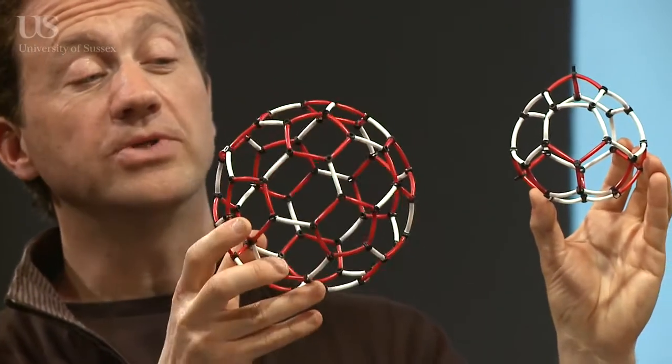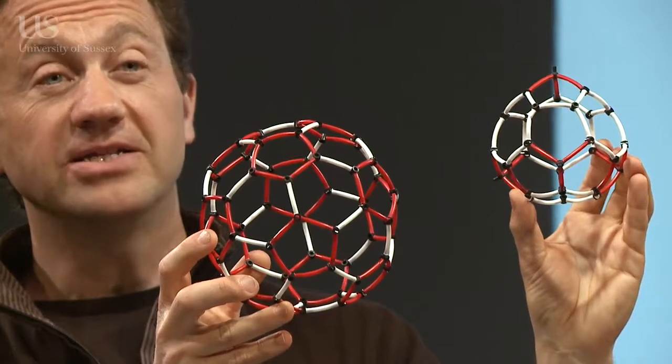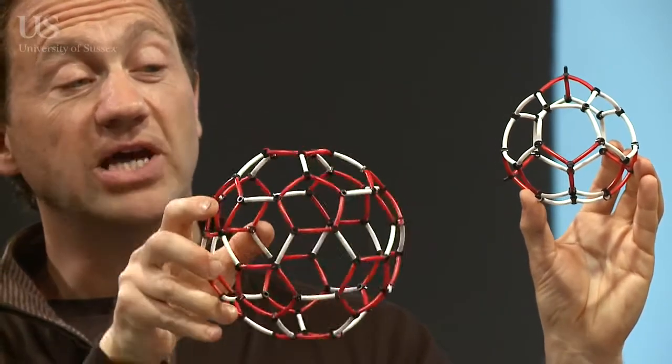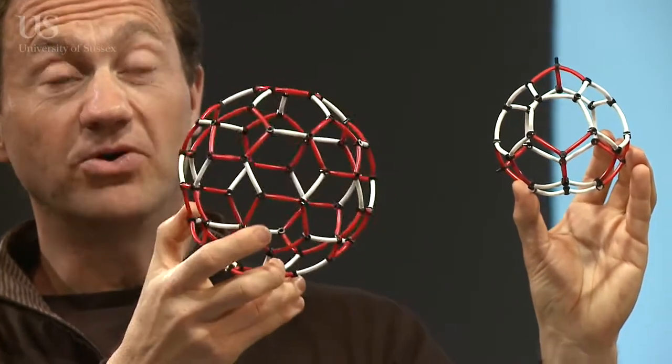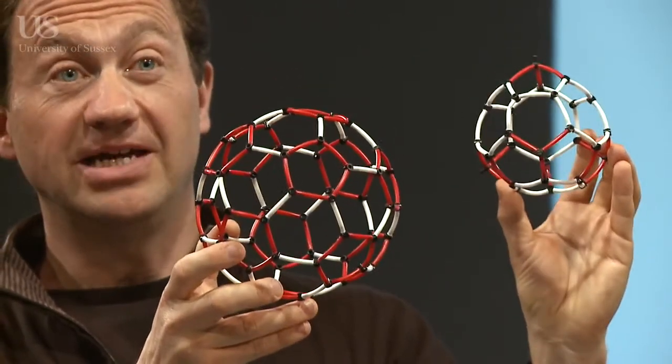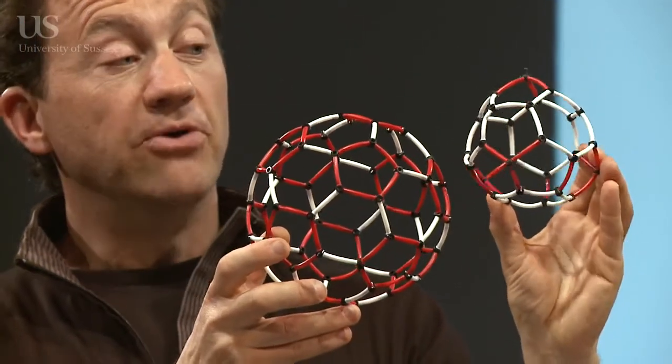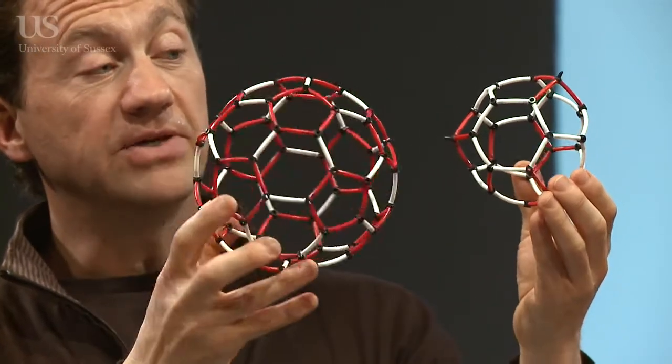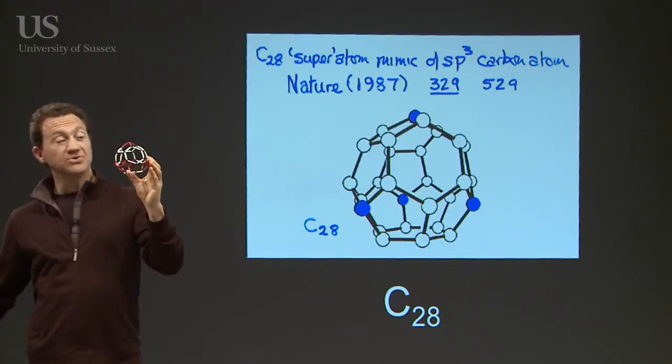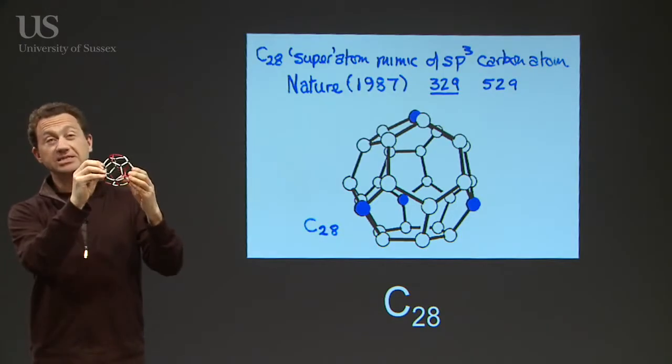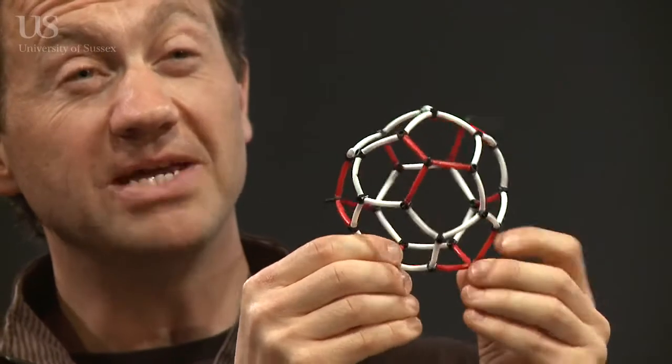So what happens is, you go smaller than C60, the pentagons are no longer isolated from each other by white bonds in the model. They actually have to be side by side, and that makes them, in principle, much less stable. But as you go down in size of the cages, there are certain molecules that might have particular stability, and C28 may be one of them.